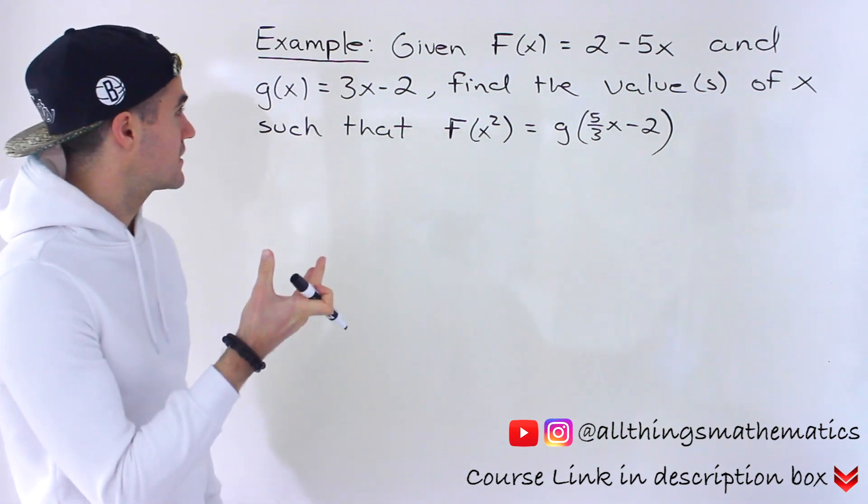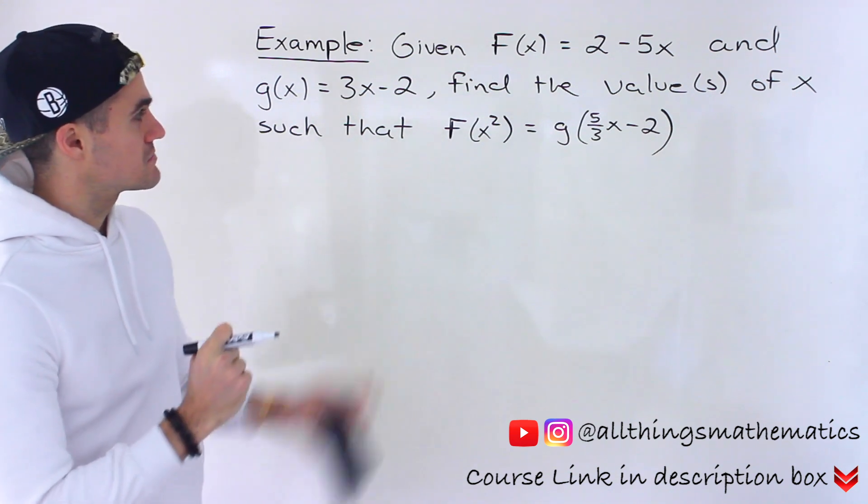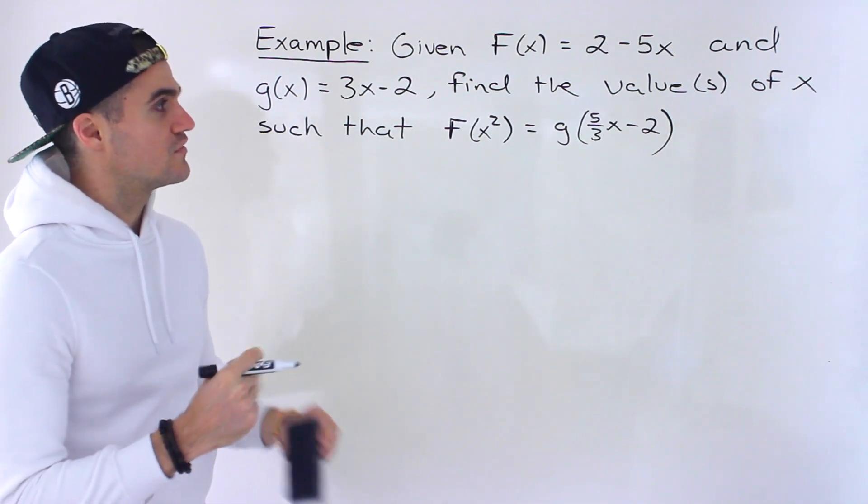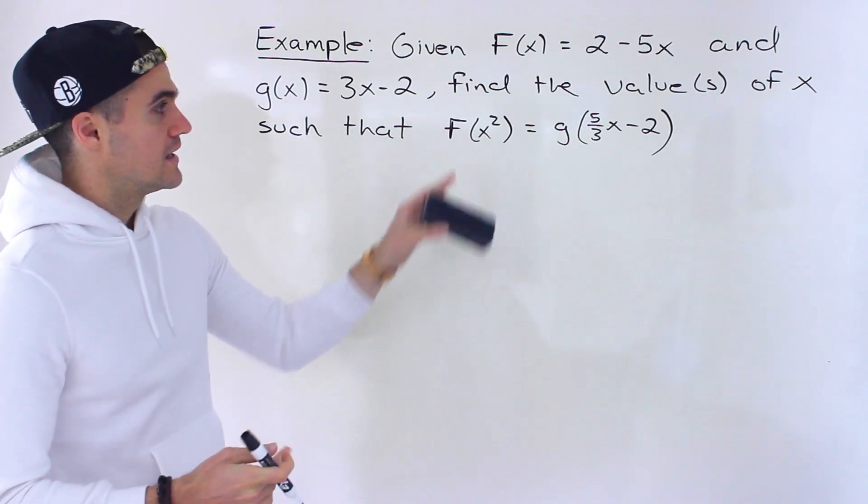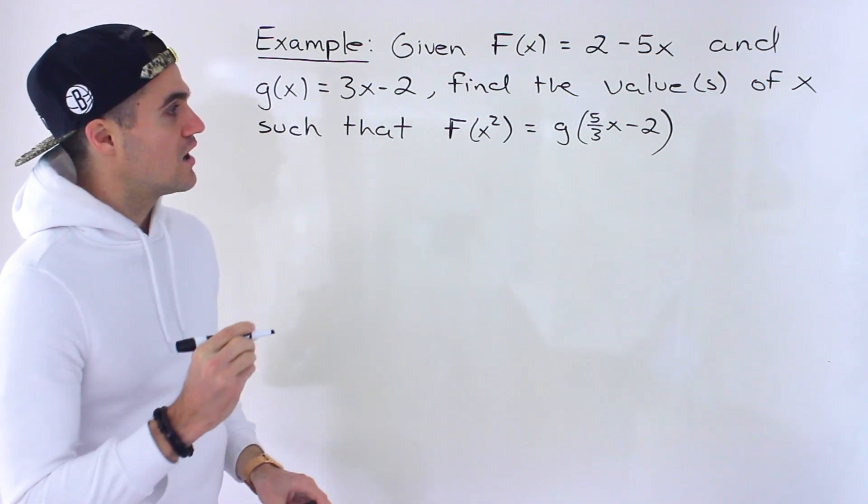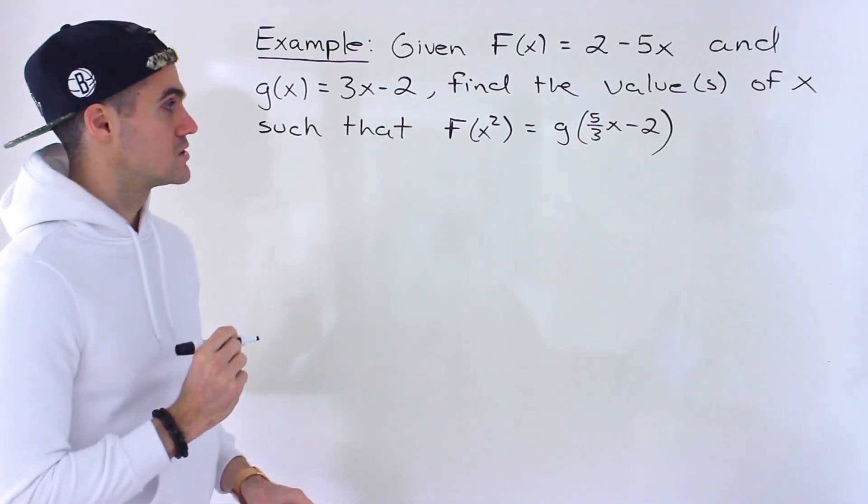is equal to 2 minus 5x, and then g of x is equal to 3x minus 2. We have to find the value or values of x such that f of x squared is equal to g of 5 over 3x minus 2.